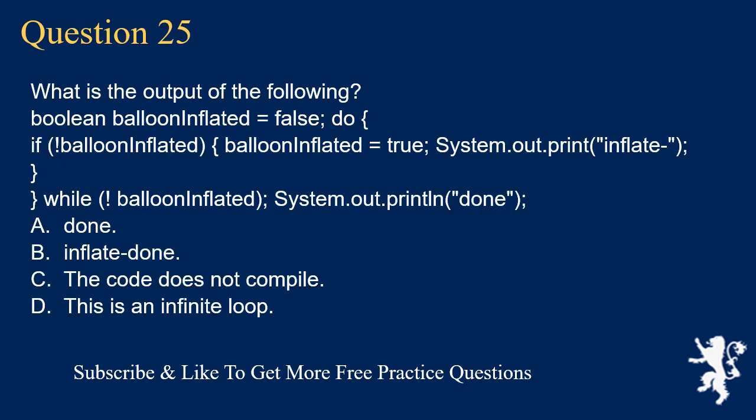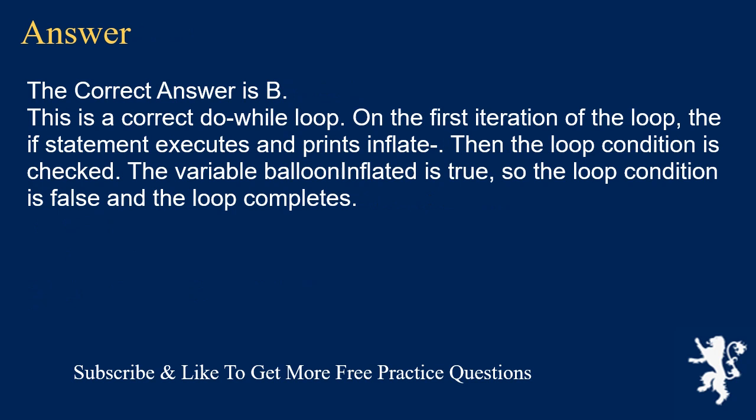Question 25. What is the output of the following? boolean balloonInflated = false; do { if (!balloonInflated) { balloonInflated = true; System.out.print("inflate"); } } while (balloonInflated); System.out.println(); A. done. B. inflate done. C. The code does not compile. D. This is an infinite loop. The correct answer is B. On the first iteration, the if statement executes and prints inflate. Then the loop condition is checked. The variable balloonInflated is true, so the loop condition is false and the loop completes. Done is then printed.